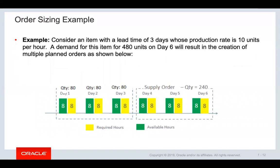In this example, the lead time for an item is 3 days, the production rate is 10 units per hour, and available resource capacity is 8 hours per day. Since the processing lead time is 3 days, the maximum supply created in this case would be 240 units. If the demand quantity is more than 240 units, multiple supplies would be created.